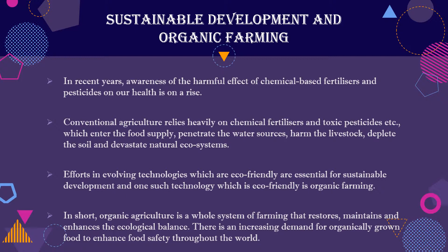In this video, we talk about sustainable development and organic farming. Sustainable development means that whatever you do will not harm the environment. In our agriculture methods, a lot of fertilizers and pesticides were used, which have harmful effects — problems in our health, water pollution, livestock health issues, and soil degradation. In short, there was a harmful effect on the entire environment. So we will make an effort to replace that technology to achieve sustainable development.